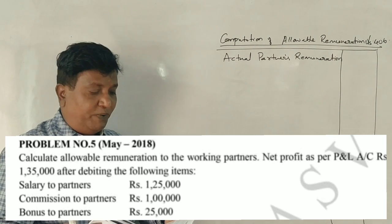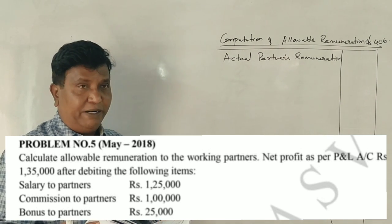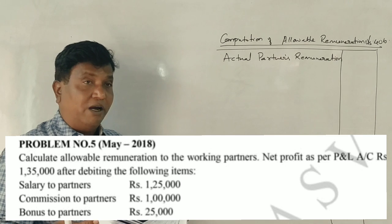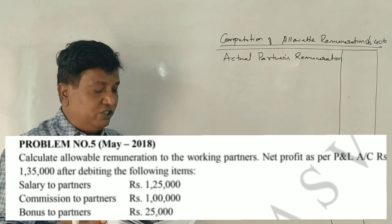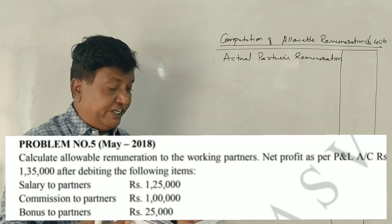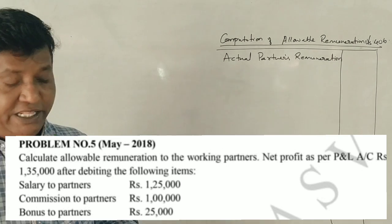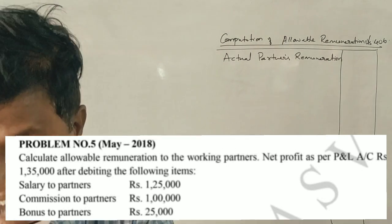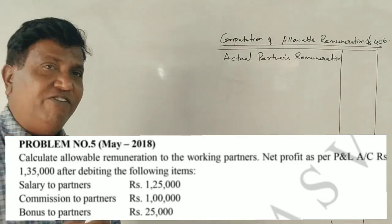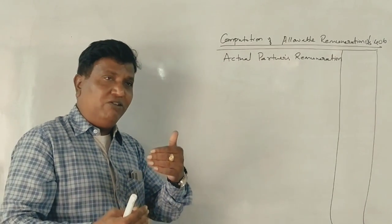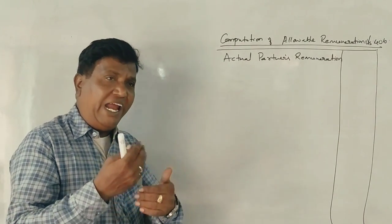These are the specific terms: commission to partners and bonus to partners. These are inadmissible items, so they are going to be added back.